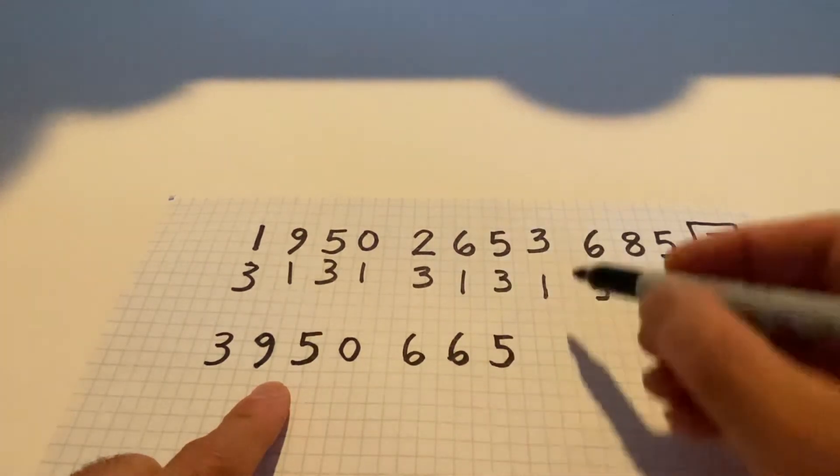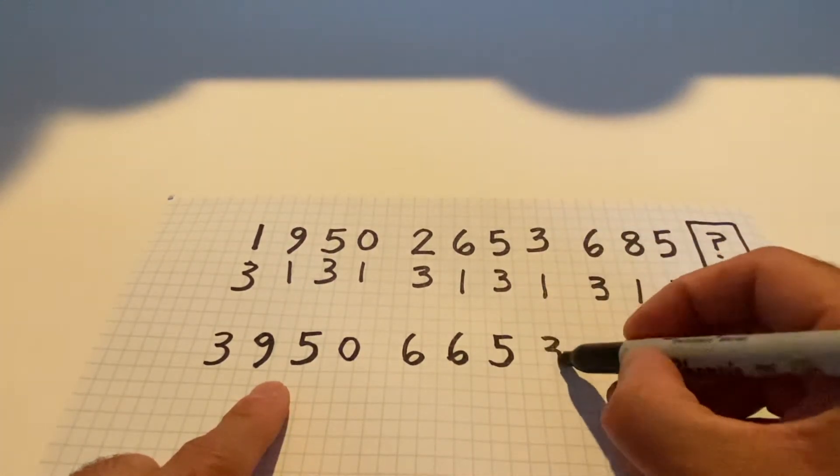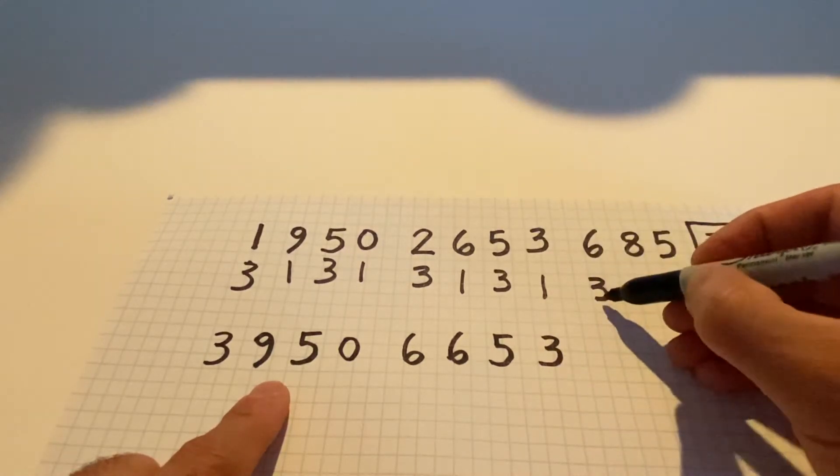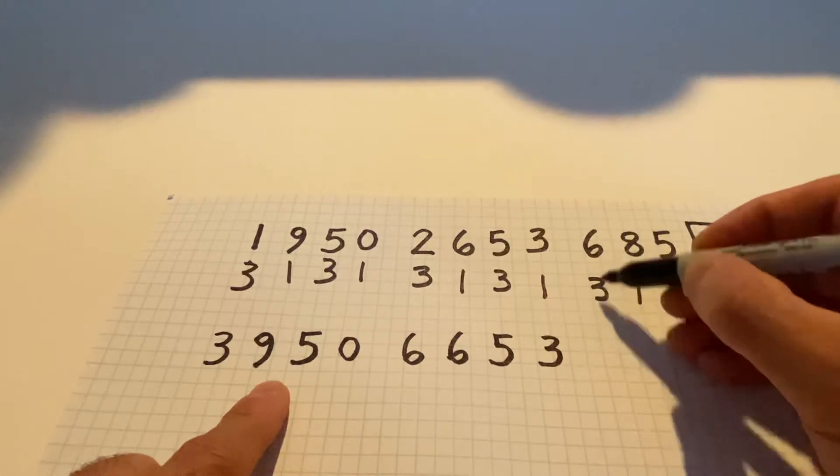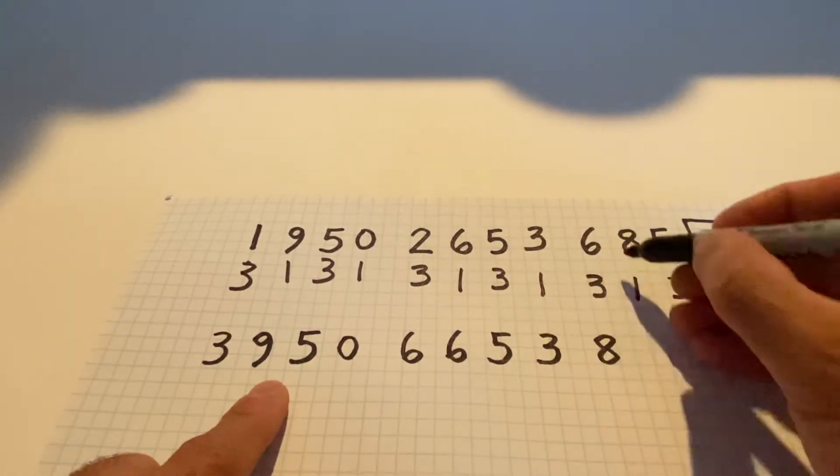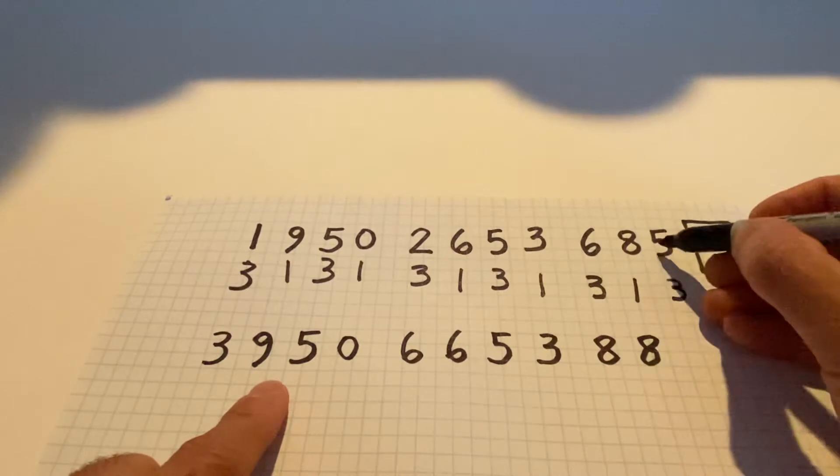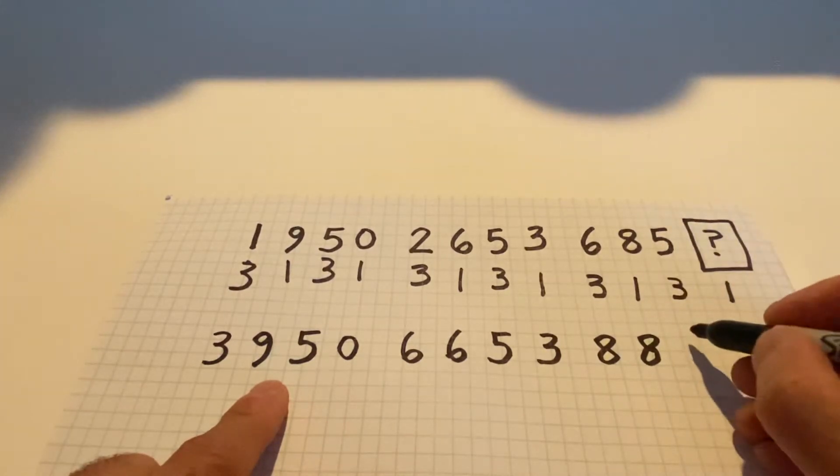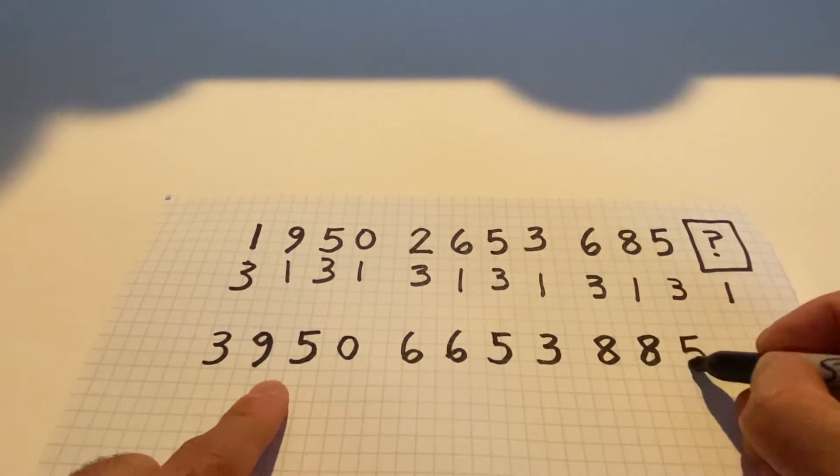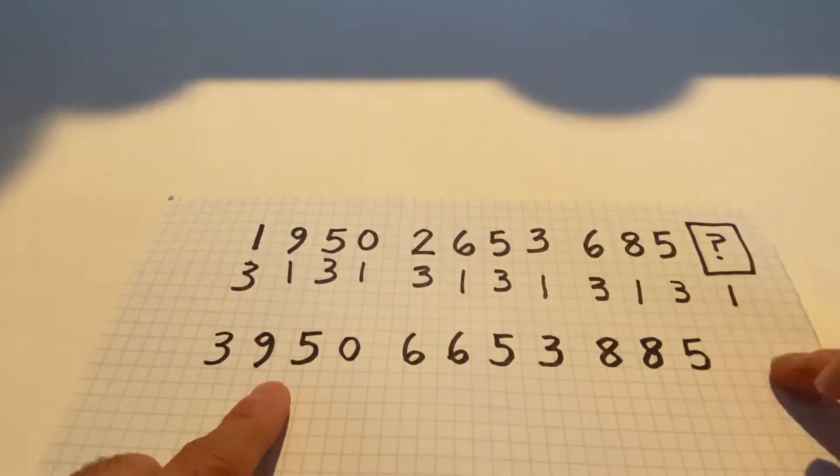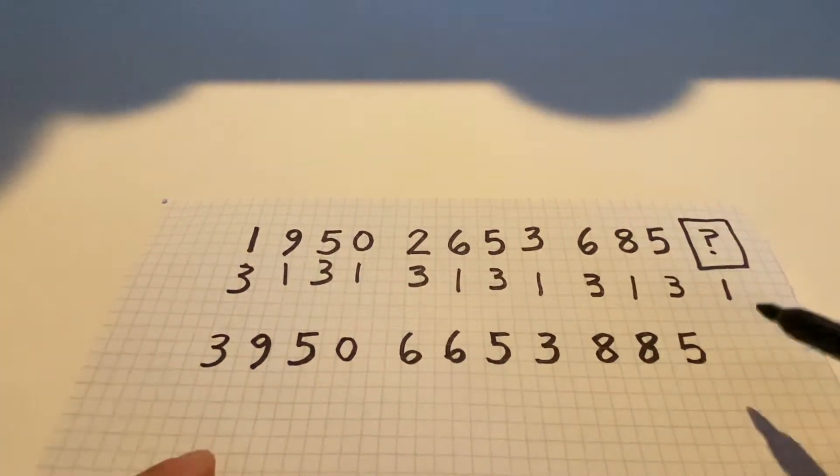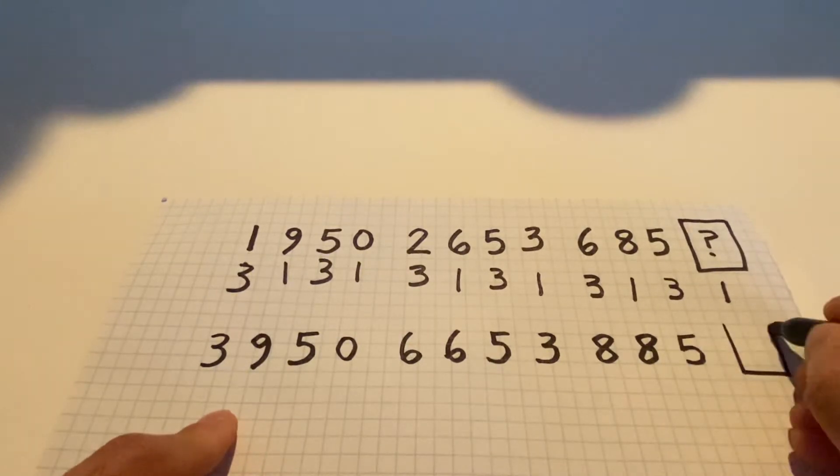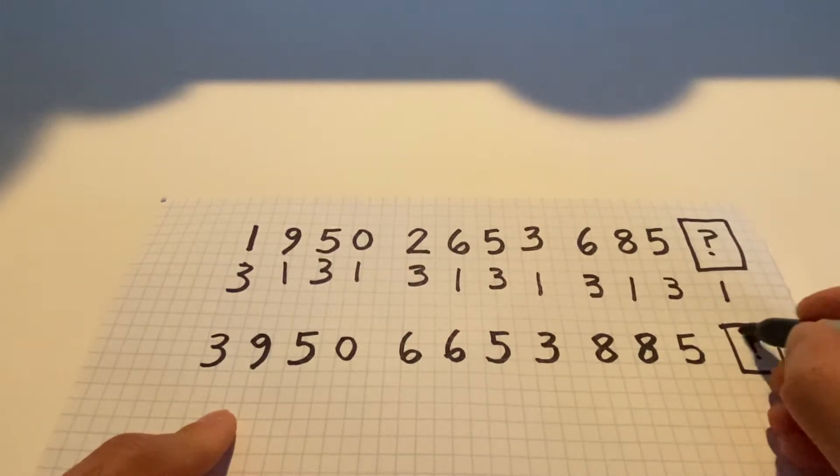Three times one is three. Six times three, 18. We don't care about the one, so it's just eight. Eight times one, also eight. Five times three, again, 15, so that's a five. And of course, we have the check digit, we can ignore it for now. So the whole idea is that we want to know what is this last digit, the check digit.